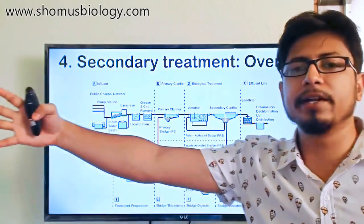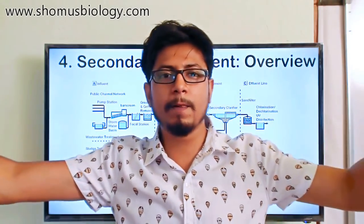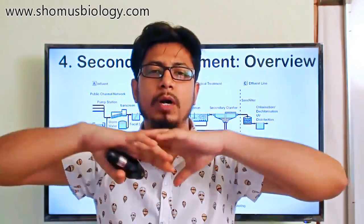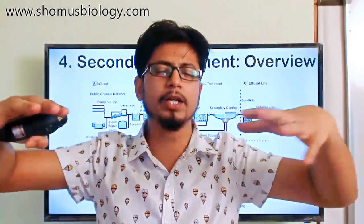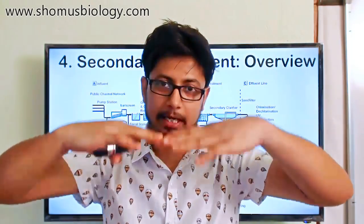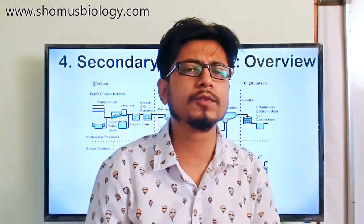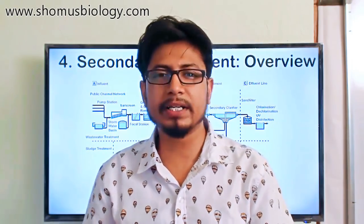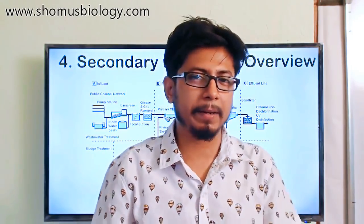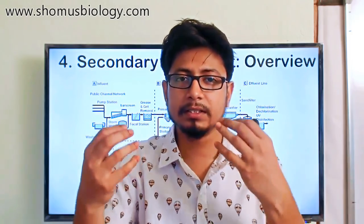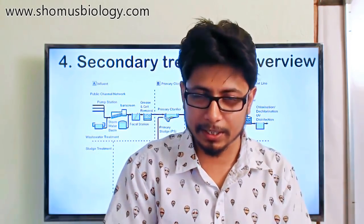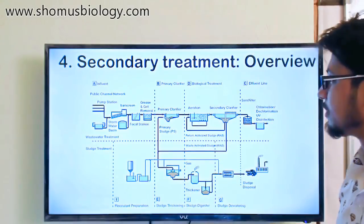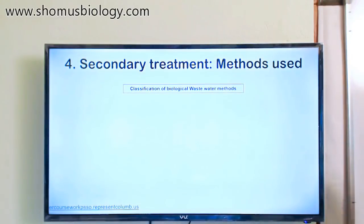After aeration, the effluent goes to the secondary clarifier, which is a giant vessel with very low water movement so that solids can settle. The solids being settled include any debris or materials produced by bacteria after they utilize the dissolved organic materials present in the wastewater.